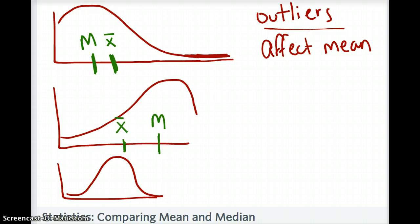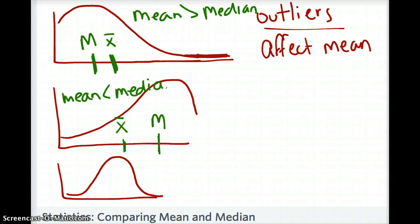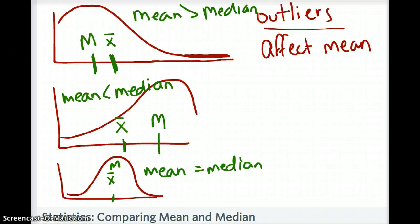For a left skewed distribution, you'll have your median closer to the peak and your mean (x-bar) pulled toward the tail. So in a right skewed distribution, mean is greater than median. In a left skewed distribution, mean is less than median. And when you have a symmetrical distribution, your mean and your median are equal — or extremely close to each other, depending on how perfectly symmetrical the graph is.